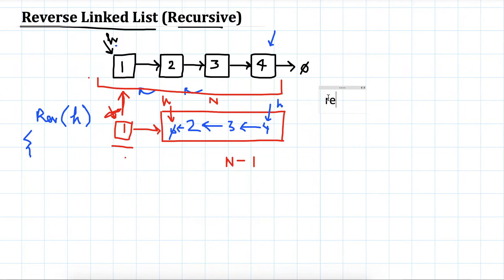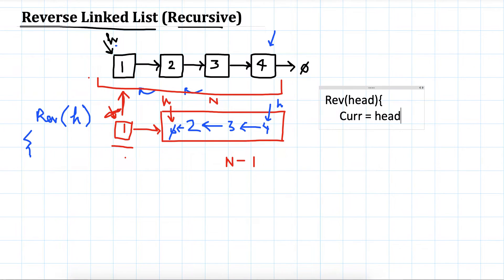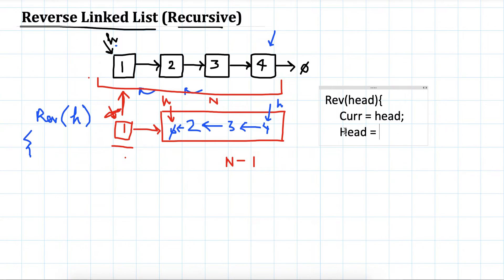So we have a function reverse that takes head. We save the first node in a variable called current, and call the same function on the further node. We update head to current's next, so we have moved head forward, and then call this function on the new head.